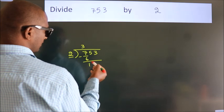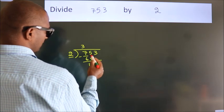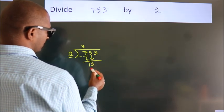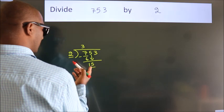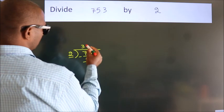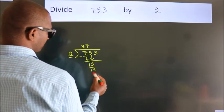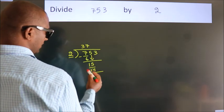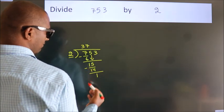After this, bring down the beside number. So, 5 down, giving us 15. A number close to 15 in the 2 table is 2 sevens, 14. Now we subtract and get 1.